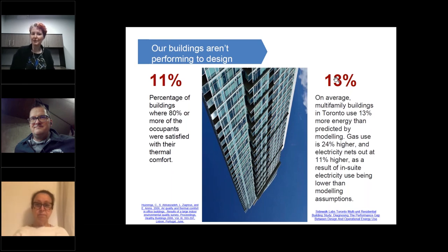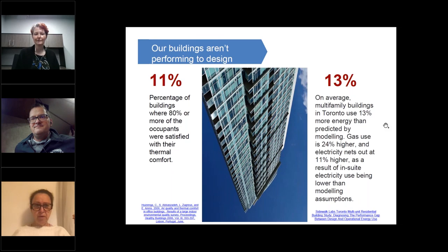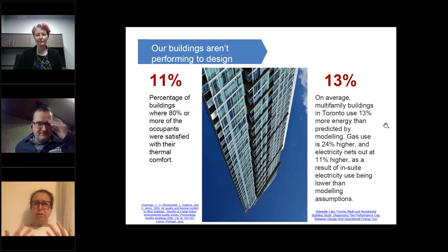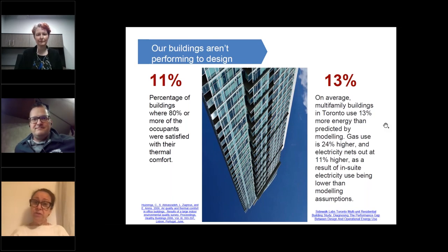In that same study, on just one measure of comfort — thermal comfort, the Goldilocks not-too-hot not-too-cold measure — only 11% of buildings had 80% or more of occupants feeling thermally comfortable. We put that down to enclosures potentially, but mostly to things that we could catch through good commissioning, extensive commissioning.